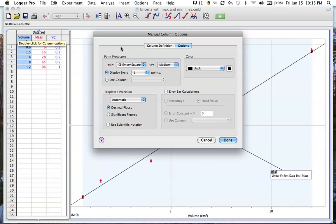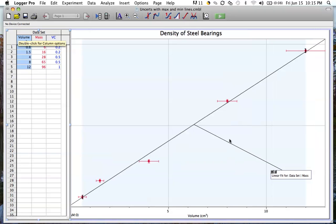Now to get those uncertainties to show up, I need to double-click the volume column, click error bar calculations. But now, since I'm not using a fixed value and I'm not using a percentage, I'm using these values that I put in here, I'm going to choose use column data, data set volume uncertainty. And as I click done, now I have all of my uncertainties there on my graph.